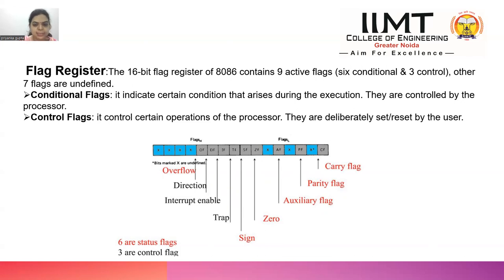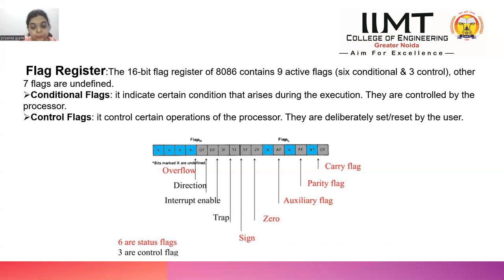The 8086 has a 16-bit flag register containing nine active flags: six conditional flags and three control flags. Conditional flags indicate conditions such as carry, zero result, sign, overflow, parity, and auxiliary carry. Control flags include the direction flag (execution direction of the program), the interrupt enable flag (enables or disables interrupt servicing), and the trap flag (enables step-by-step execution for debugging).